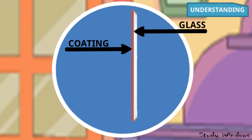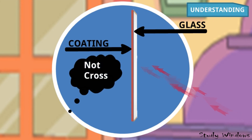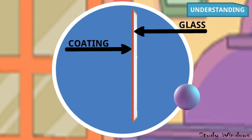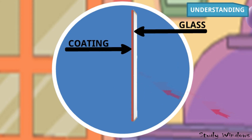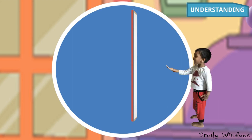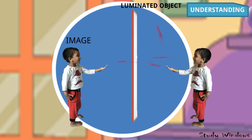The mirror has a glass portion and a coating on the back side. Light falls on the mirror and cannot cross it because of the coating. Just like a ball bouncing back, light also bounces back from the glass. Here, Advik is standing, light comes from the luminous object, falls on the object, then light rays fall on the mirror and come to the eyes, and we see the image in the mirror.